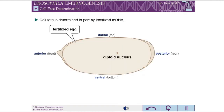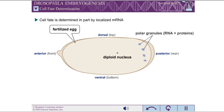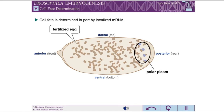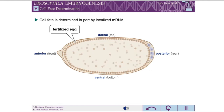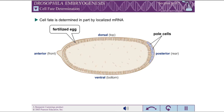Cell fate is determined in part by localized mRNA in the Drosophila egg. For example, the oskar mRNA is located at the posterior pole of the egg cell. The oskar mRNA encodes an RNA-binding protein responsible for the assembly of polar granules. The approximately 30 nuclei that migrate into the polar plasm at the posterior end, along with the polar granules, form pole cells that differentiate into germ cells.